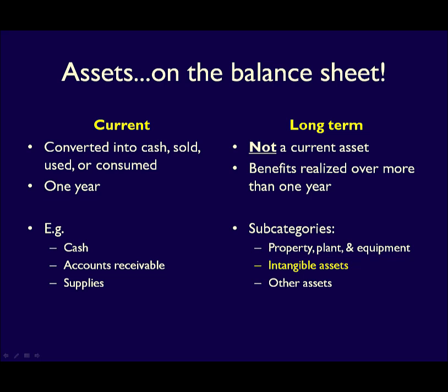Next are intangible assets. If tangible assets are physical, then intangible assets are non-physical — they can't be touched, picked up, or kicked. Instead, intangible assets represent legal rights such as a license, trademark, or brand name. Two examples are the right to use a license for a period of time, or the software that a business has a right to use for many years.